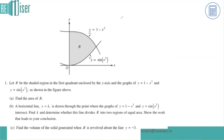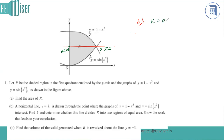For Part B, a horizontal line y = k is drawn through the point where y = 1 minus x cubed and y = sine of x squared intersect, which is this point of intersection. We need to find k and determine whether the line divides R into two regions of equal area. Since the y-coordinate of the intersection is 0.552, the value of k is 0.552.